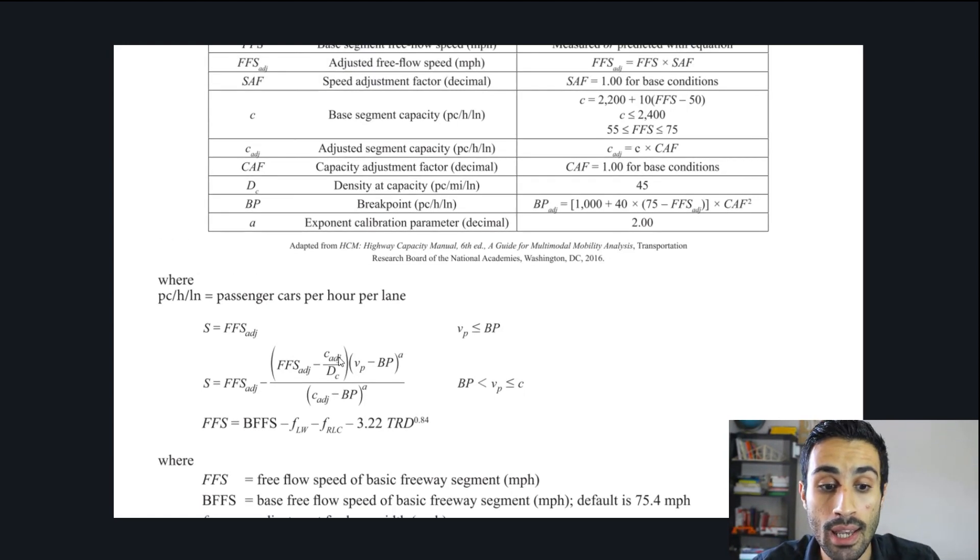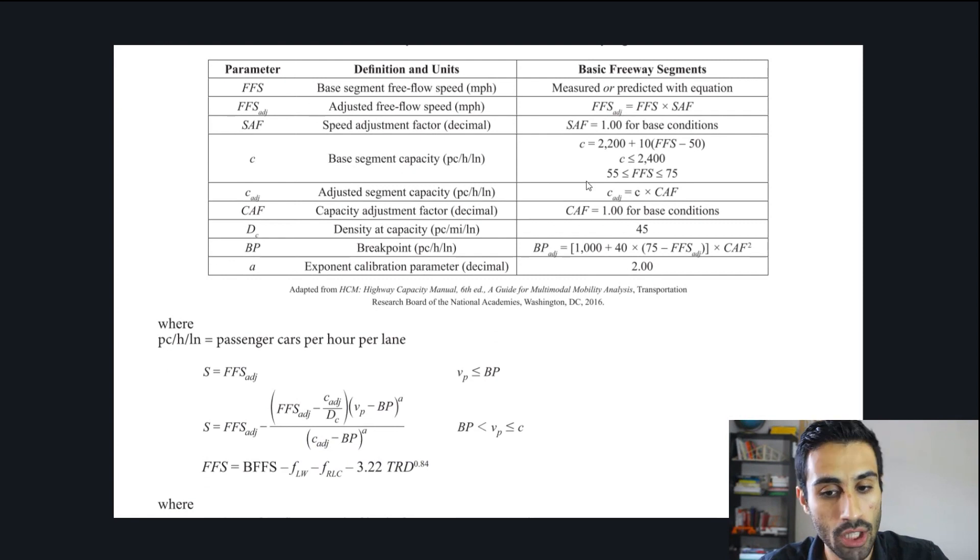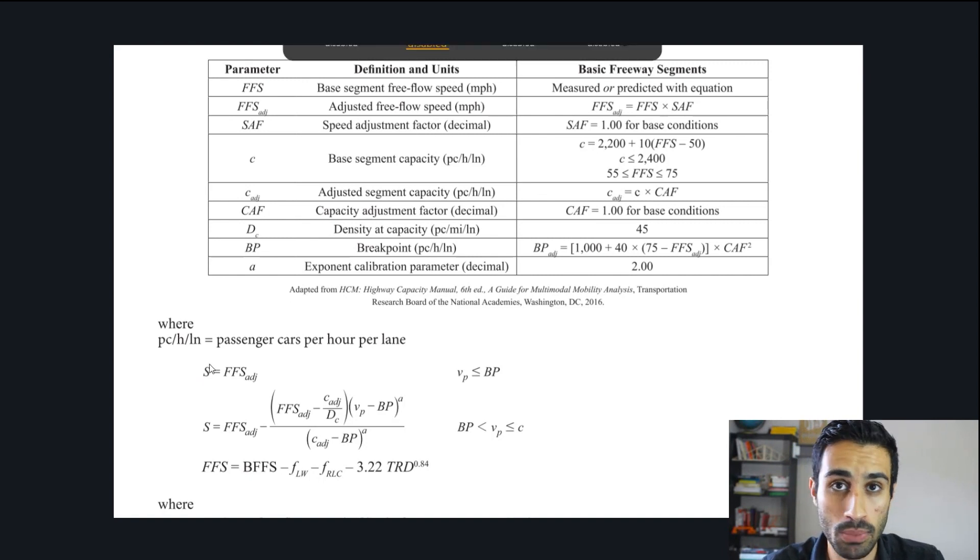They removed that and updated it for the new unified speed flow theory based on the highway capacity manual. Make sure you know this section. This is what they did. They did that for the basic freeway segments. This is essentially all of this. You can find a lot of different parameters, but the biggest thing is finding that speed.